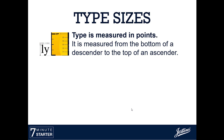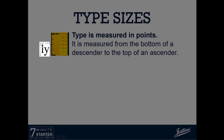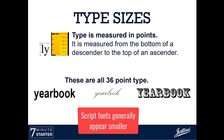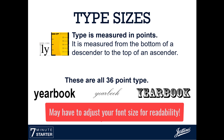When we talk about different type size, it is measured in points — from the top of the ascender all the way to the bottom of the descender. These are all size 36 font, but they look a little different depending on the type of font. The sans serif on the left might look bigger than the script, which looks smaller because it's slanted. The decorative font on the right looks even bigger because it's all capitals. They're all the same size, so we may have to adjust depending on how it prints on the page.